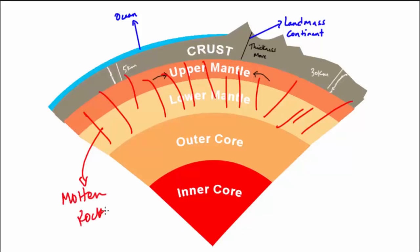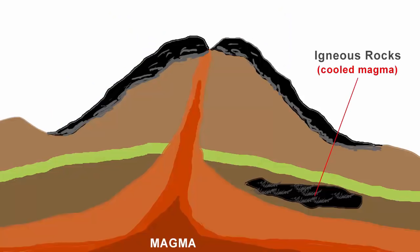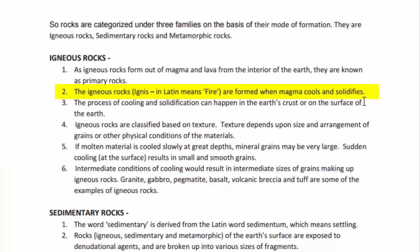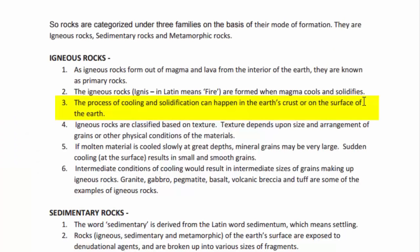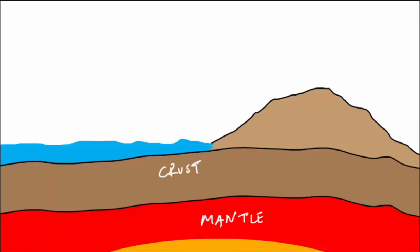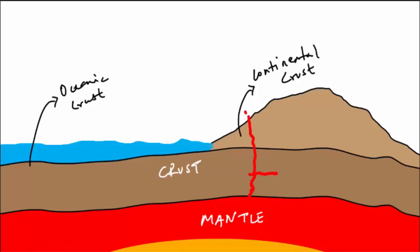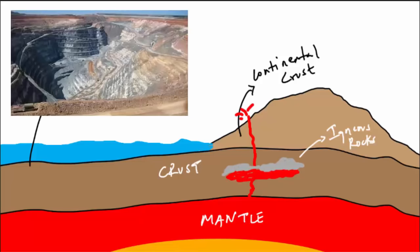The mantle is filled with magma, and the process of cooling and solidification can happen both in the earth's crust as well as on the surface of the earth. When magma comes out of the mantle, it can sometimes just stay under the crust — it need not get out on the surface. Sometimes magma just cools down under the crust itself. That's why during open-cast mining, large chunks of igneous rocks are found.